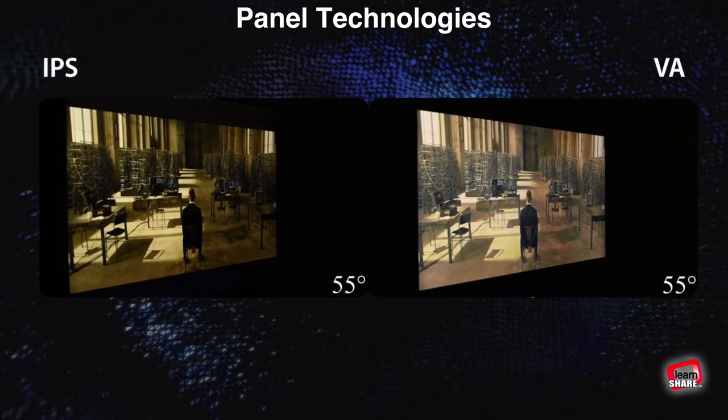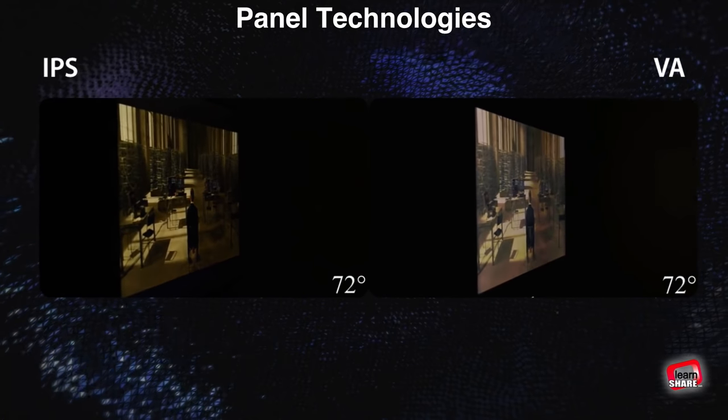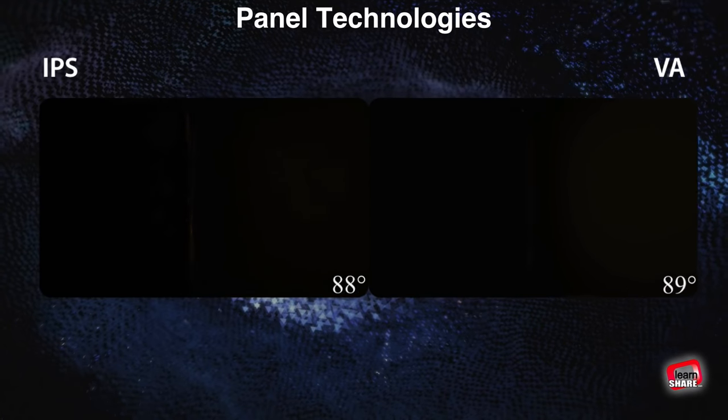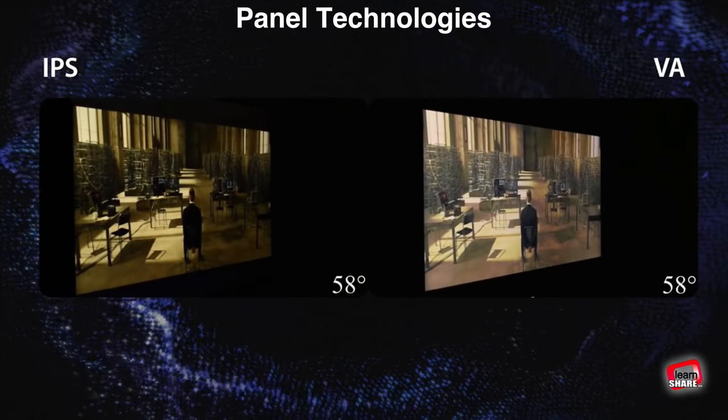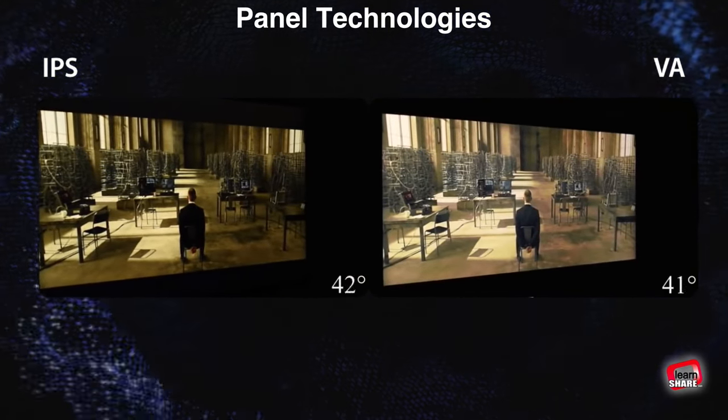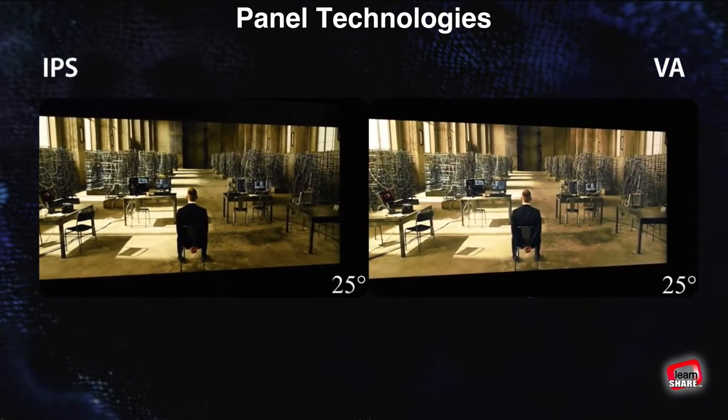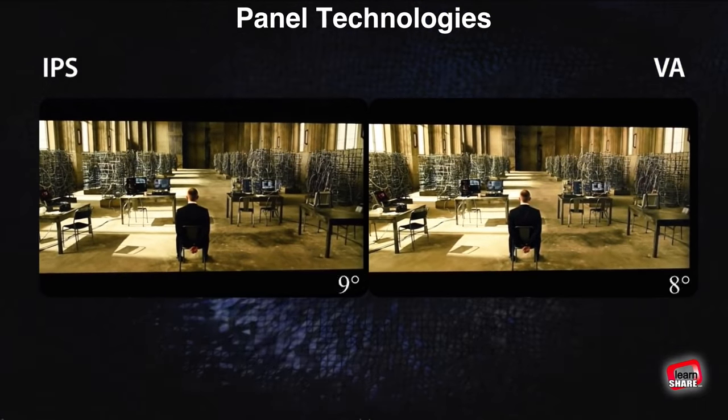VA panels are more widely used and are made by a variety of manufacturers. IPS panels offer slightly wider viewing angles than VA panels but struggle with contrast. On the other hand, VA panels feature narrower viewing angles but generally produce much better contrast.